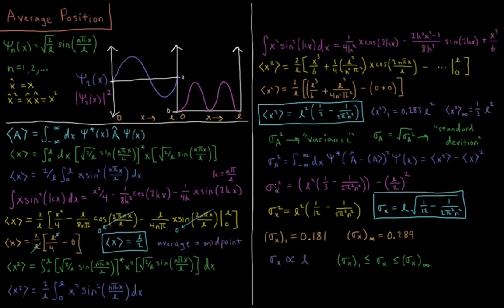Substituting in x, I have sigma x squared equals this value, l squared 1 over 3 minus 1 over 2 pi squared n squared, minus expectation value of x is l over 2, that value squared.